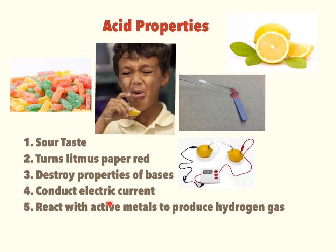That process of acids reacting with bases is called neutralization, which we'll talk about later. Acids also conduct electric current, and we know from last unit that conducting electric current is based on the charged particles in solutions. Here's a picture of two lemons hooked up to a little stopwatch — the charges pass through because of the charged particles in the acids. Something unique to acids is that they react with active metals to produce hydrogen gas. For example, we put zinc and hydrochloric acid together and it started to bubble, and then the gas being given off went pop when we put a match to it — that was the hydrogen gas.